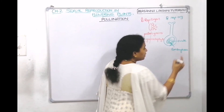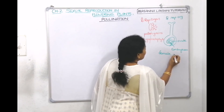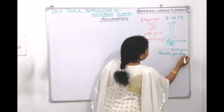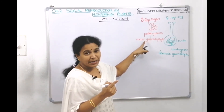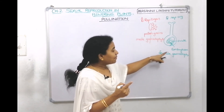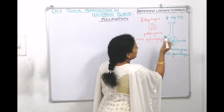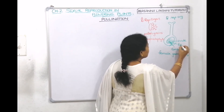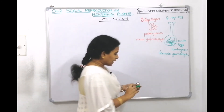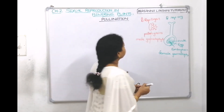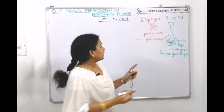The embryo sac is called the female gametophyte. The pollen grain produced inside the anther is called the male gametophyte, which contains male gametes. The ovule contains the embryo sac representing the female gametophyte. Inside the female gametophyte is the egg, which is the female gamete. The male gametes are present inside the pollen grain.